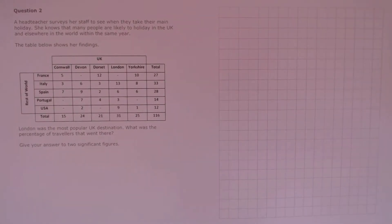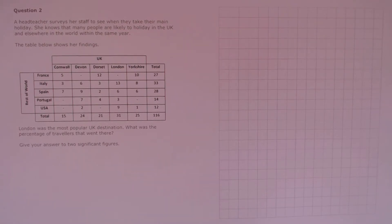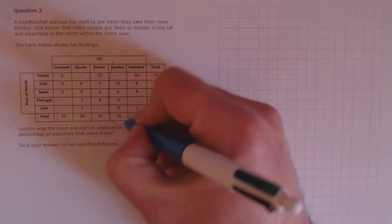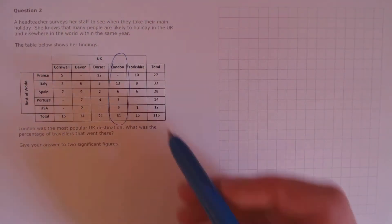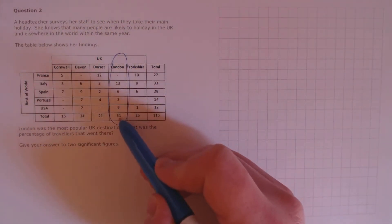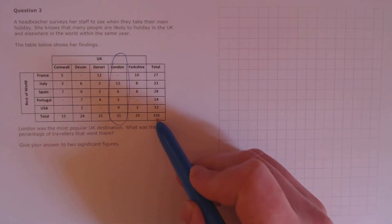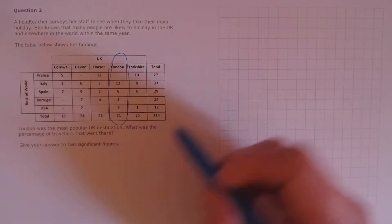Question 2. A headteacher surveys her staff to see when they will take their main holiday. She knows that many people are likely to holiday in the UK and elsewhere in the world within the same year. The table below shows her findings. London was the most popular UK destination. What was the percentage of travellers that went there? Give your answer to two significant figures. So we need to look at this column here, and we have the total, 31, and the total of all travellers, 116.